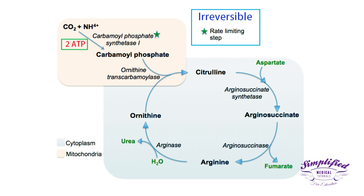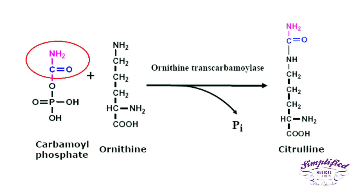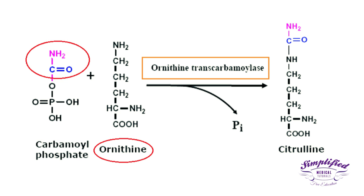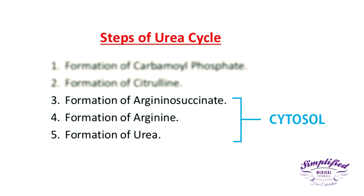This step consumes two ATP and is an irreversible, rate-limiting step of the cycle. The next step is the formation of citrulline. The carbamoyl part of carbamoyl phosphate is transferred to ornithine by the enzyme ornithine transcarbamoylase to form citrulline. Ornithine and citrulline are basic amino acids that participate in the urea cycle, moving across the inner mitochondrial membrane via a co-transporter.